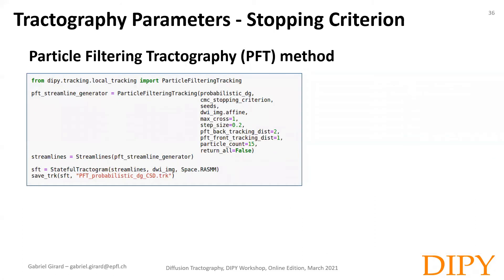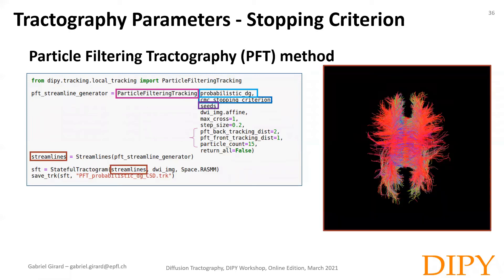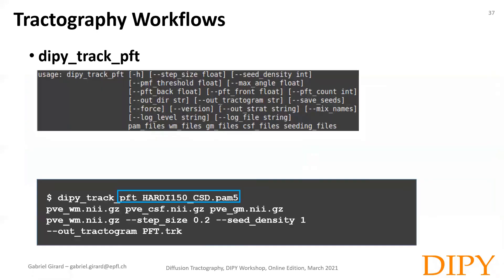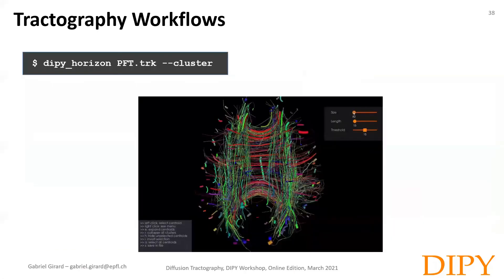To do this in DIPY, we need to replace the local tracking function with the particle filtering tracking function. It takes as input the direction getter — here for instance the probabilistic direction getter — a CMC or ACT stopping criteria that contains the partial volume estimate information, and the seeds. We can then generate the streamlines as we did previously. In a very similar fashion, we can perform the particle filtering tractography algorithm in the terminal using the DIPY workflows. The main difference here is that we input the three partial volume estimates instead of the tracking mask. Again, we can visualize the resulting tractogram.